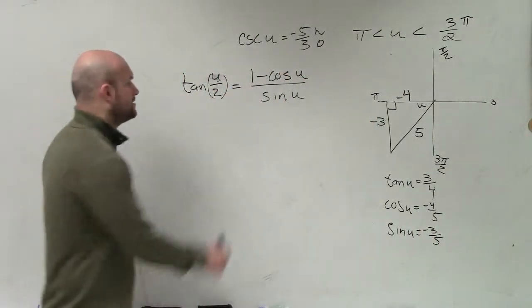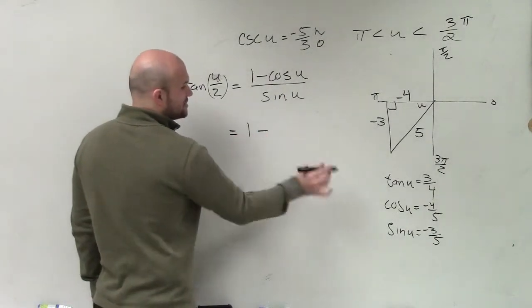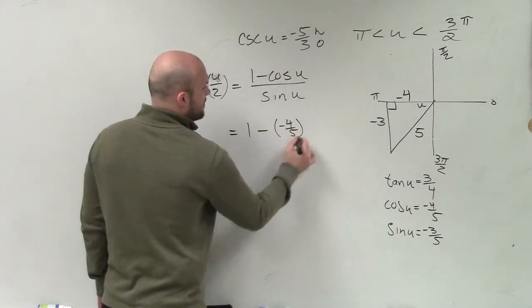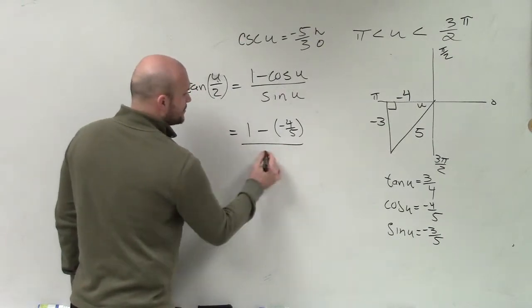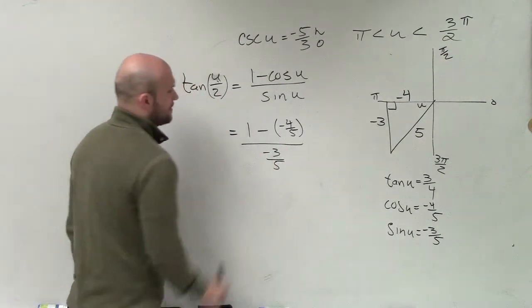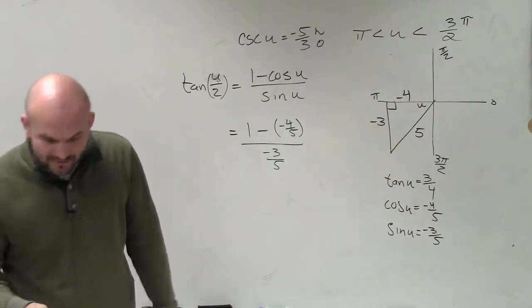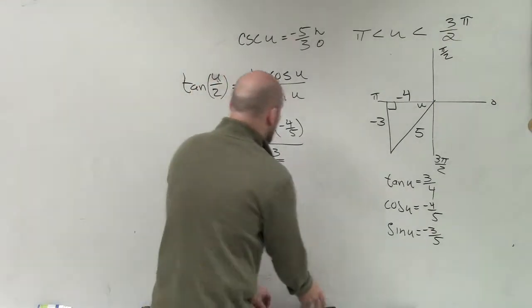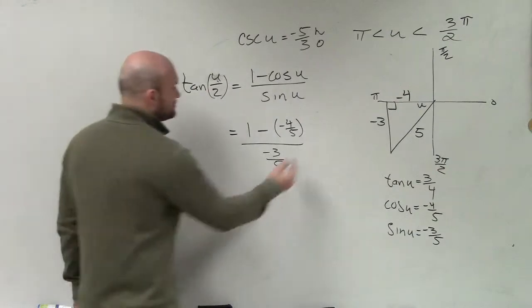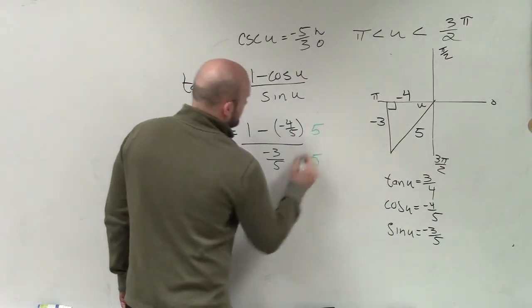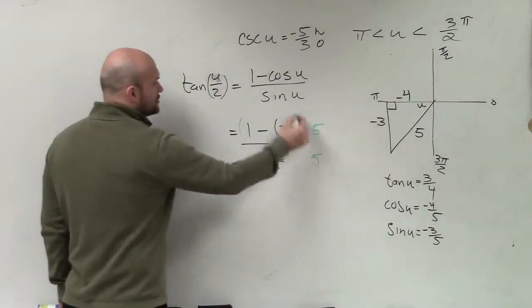So now, you just plug in your values. 1 minus cosine negative 4 over 5 over sine, which is negative 3 over 5. Now, I don't want the fives in the denominator. So to get rid of the fives, I'm going to multiply by a 5 on the top and the bottom. Then you have to apply distributive property.